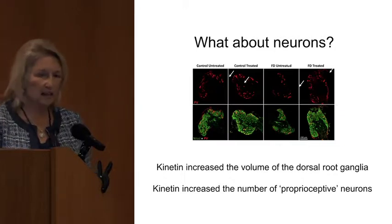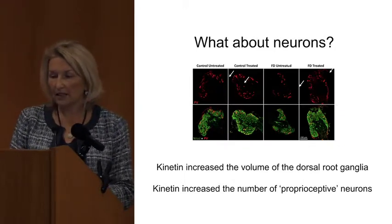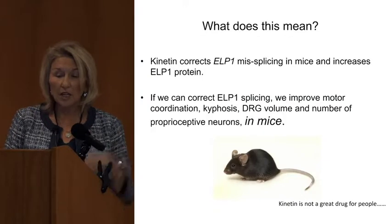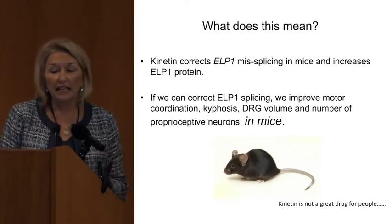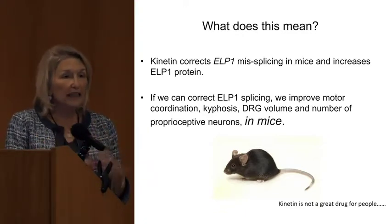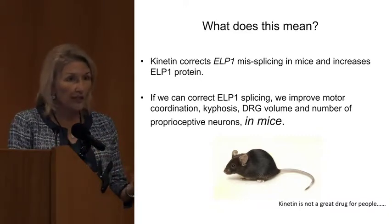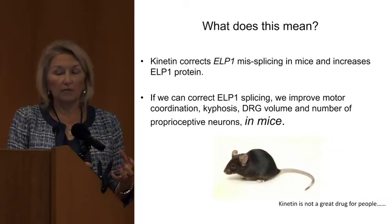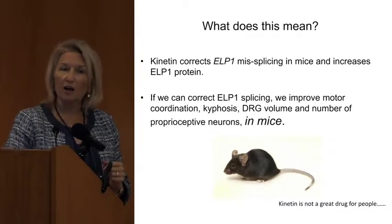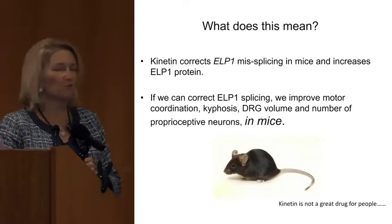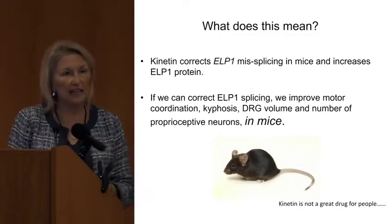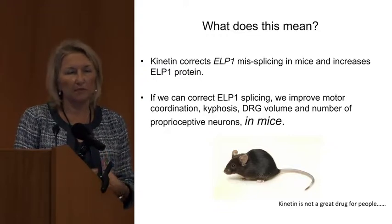The ability to sense where your legs are in space — we think about gait when we talk about proprioception. We were able to increase the number of proprioceptive neurons. So what does this mean? It means that Kinetin corrects the ELP1 misplicing in mice and increases the protein. If we can correct splicing, then we can hopefully improve motor coordination, kyphosis, DRG volume, and number of proprioceptive neurons in mice. And we all know mice aren't people — mice are not people. But this data gives us a lot of hope that if we're able to increase the amount of protein in our FD patients, we will be able to treat some symptoms of the disease.